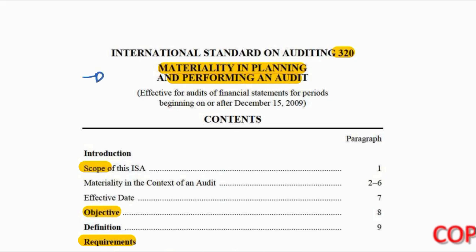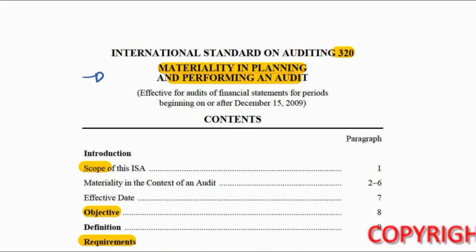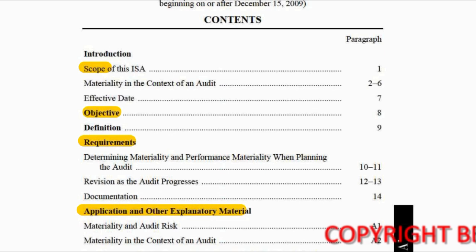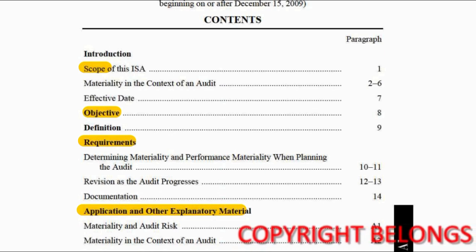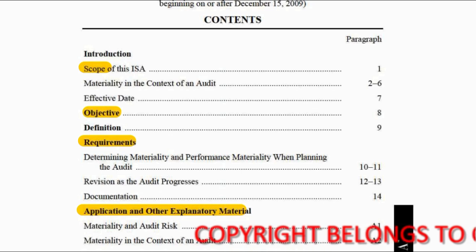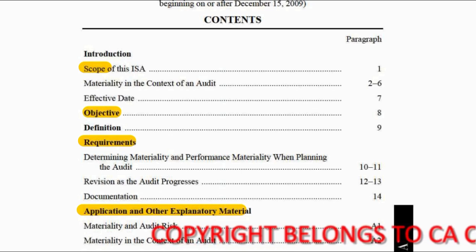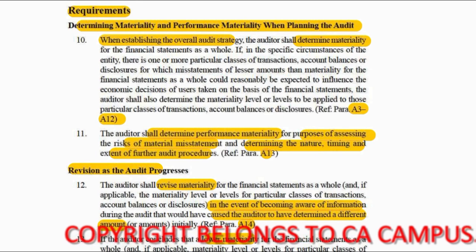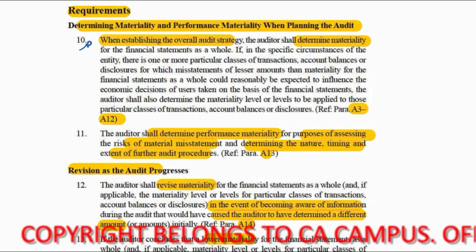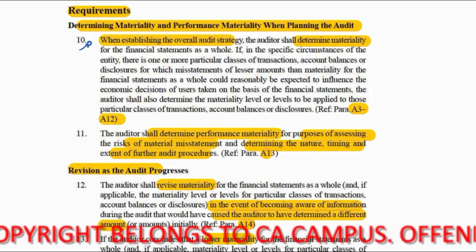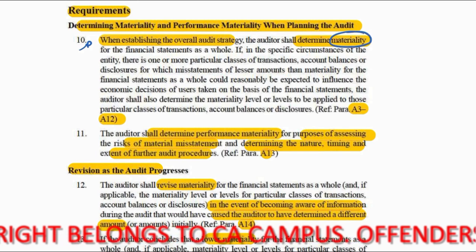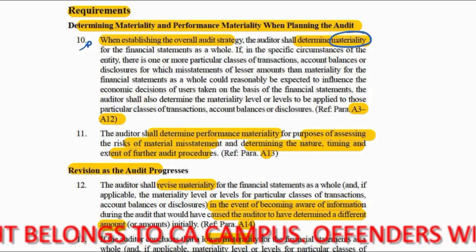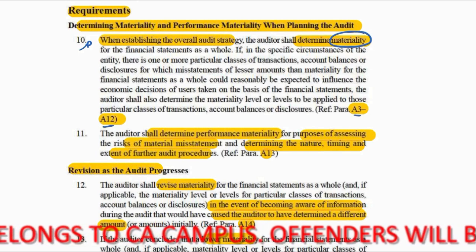ISA 320 covers materiality in planning and performing an audit — scope, objective, and requirements are all highlighted. I haven't highlighted anything else in particular, so I would jump straight to my requirements. My first requirement is paragraph 10: when establishing the overall audit strategy, the auditor shall determine materiality.